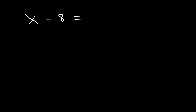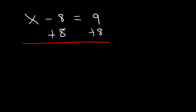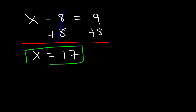Go ahead and try a similar example. Let's say that x minus 8 is equal to 9. The opposite of subtraction is addition, so we're going to add 8 to both sides to isolate the x variable. So x is equal to 9 plus 8, and 9 plus 8 is 17. To verify: 17 minus 8 is 9.